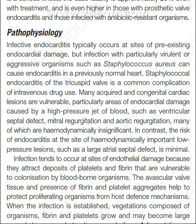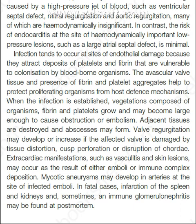Infection tends to occur at sites of endothelial damage because they attract deposits of platelets and fibrin that are vulnerable to colonization by blood-borne organisms. The avascular valve tissue and presence of fibrin and platelet aggregates help protect proliferating organisms from host defense mechanisms. When infection is established, vegetations composed of organisms, fibrin, and platelets grow and may become large enough to cause obstruction or embolism. Adjacent tissues are destroyed and abscesses may form; valve regurgitation may develop or increase if the affected valve is damaged by tissue distortion.